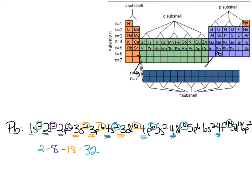For the fifth energy level, wherever there's a 5: here's a 5, here's a 5, here's a 5 — so 2 plus 6 plus 10 equals 18 in the fifth energy level. For the sixth energy level, here's a 6 and here's a 6 — adding those exponents: 2 plus 2 gives me 4 electrons in the sixth energy level, which is my outermost shell. So there are 4 valence electrons for Pb.